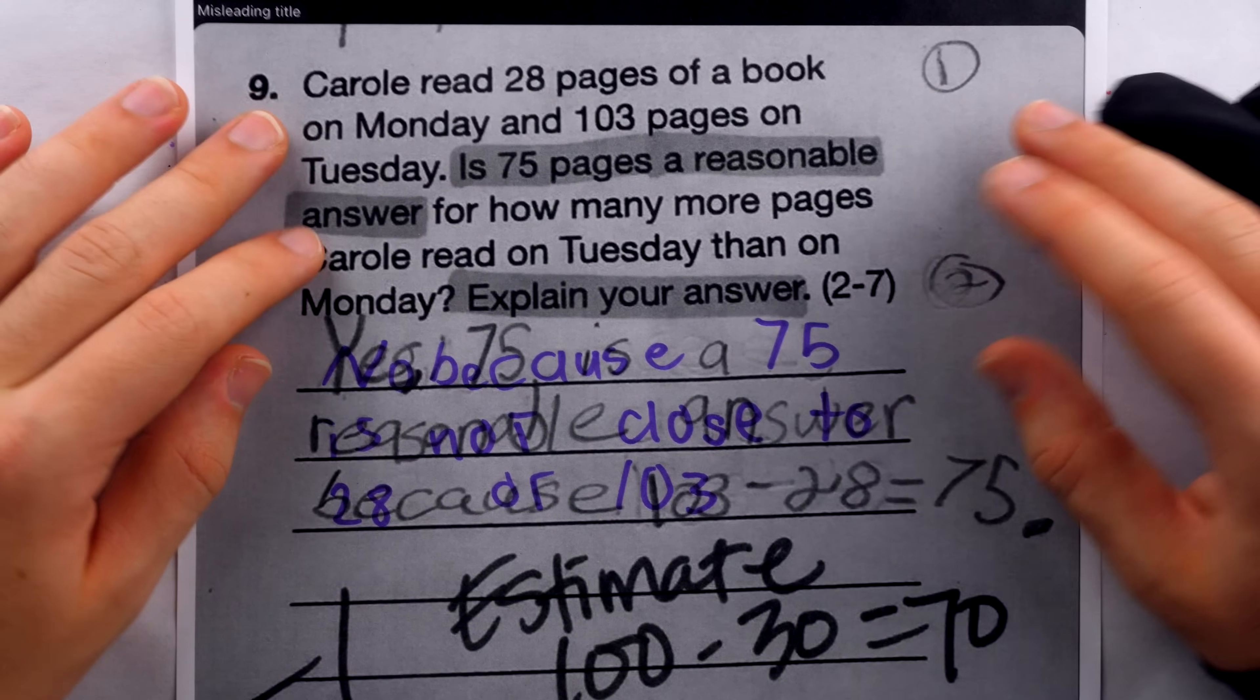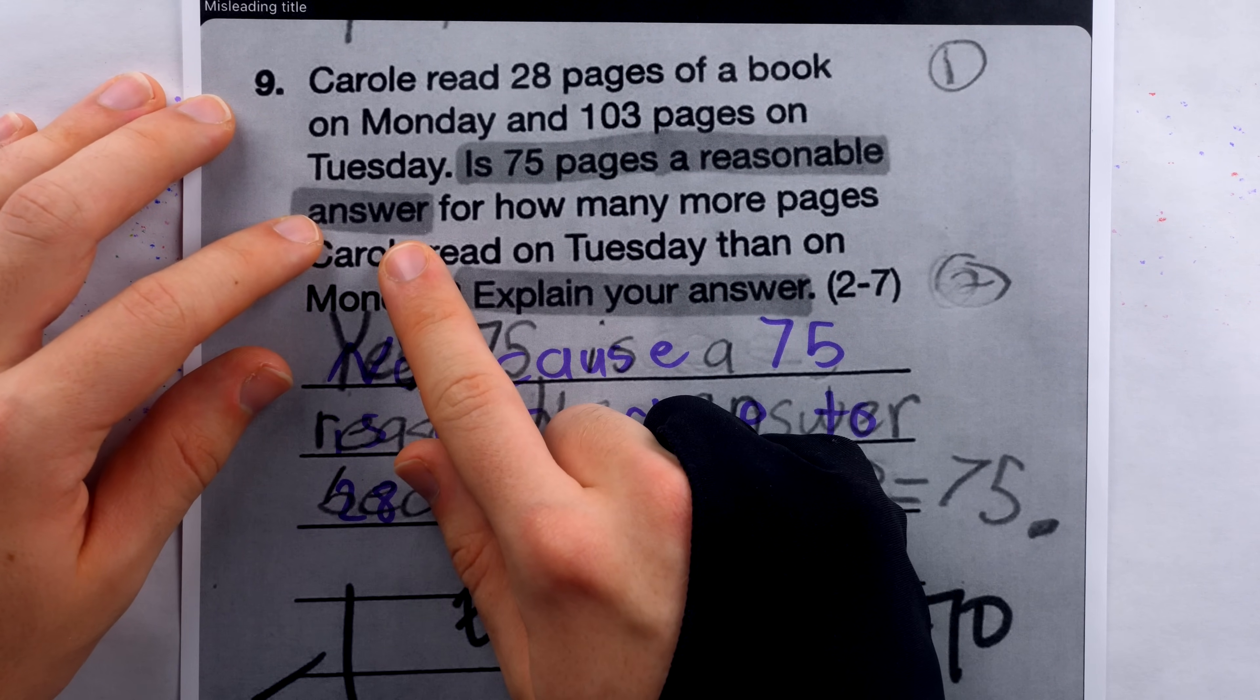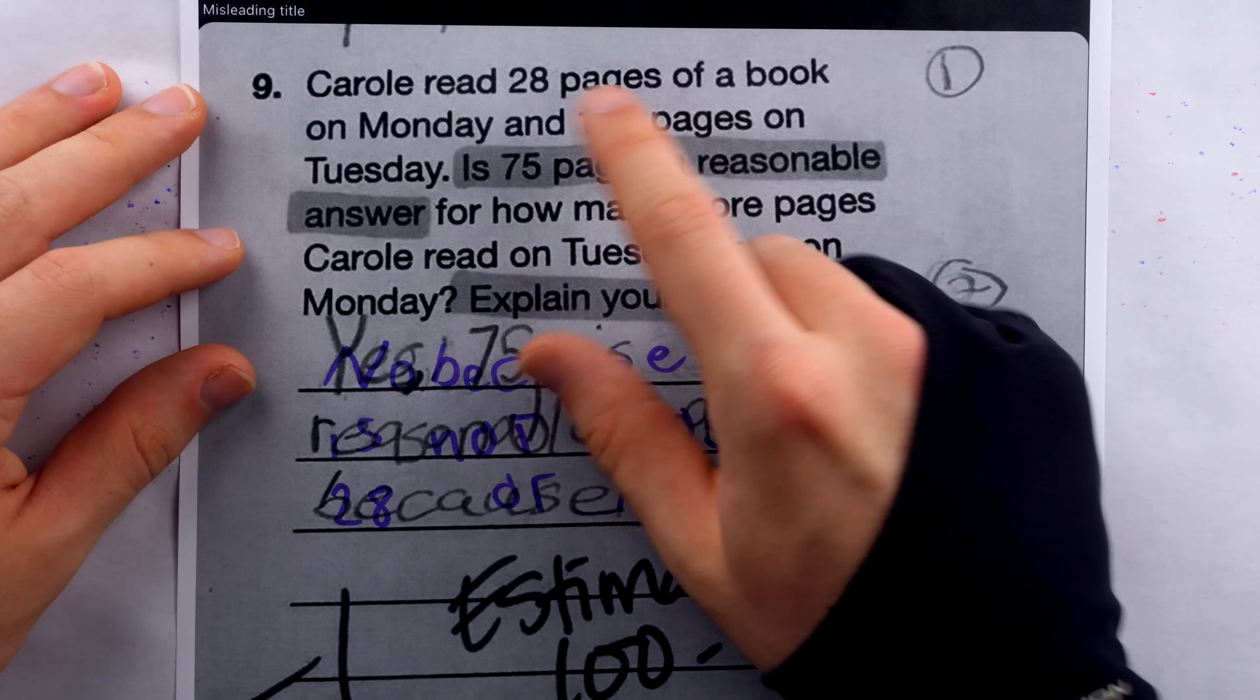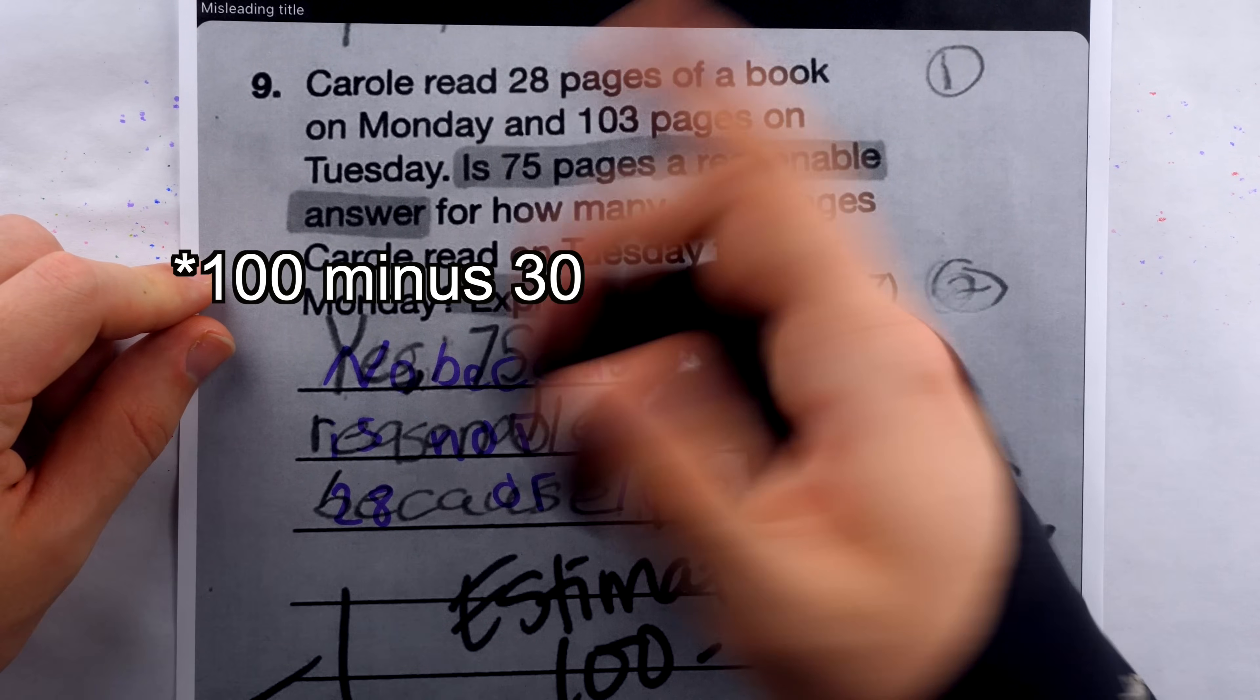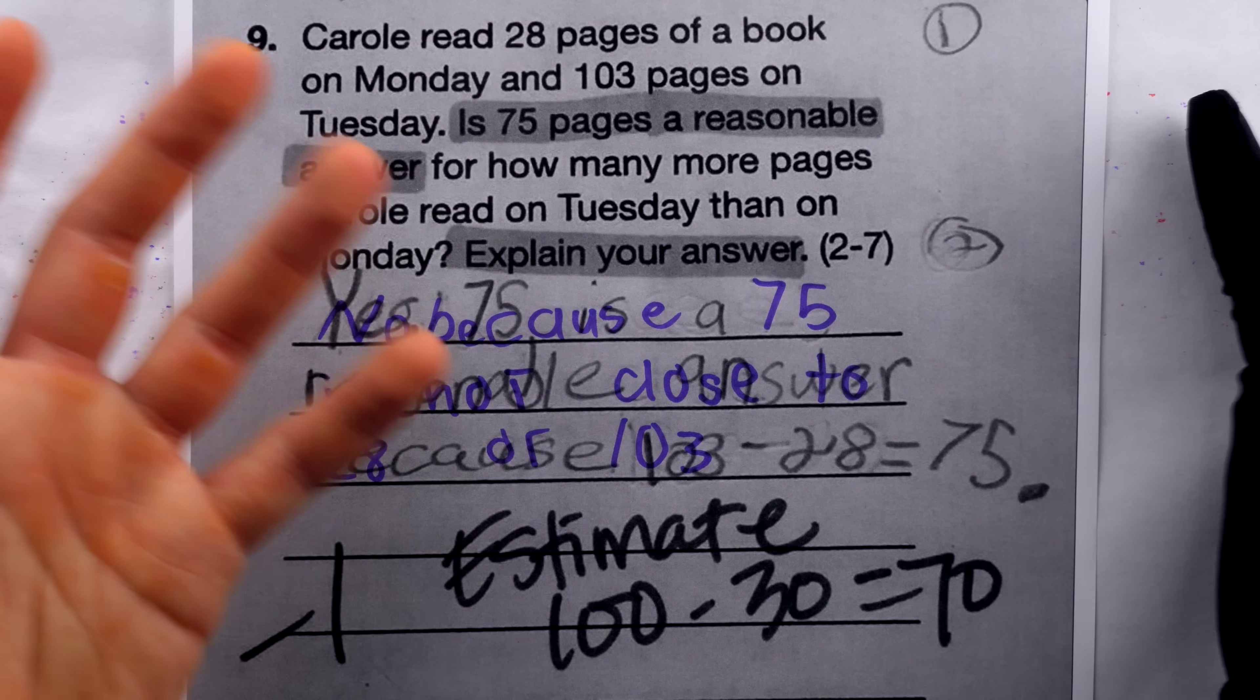So this is an interesting case. The question all by itself is a little strange because you might look at it and say, why would you ask if 75 pages is a reasonable answer when all you have to do is basic subtraction to find the exactly correct answer? But obviously, depending on the grade, this subtraction is not trivial and it might make sense to just do a quick estimation. 100 minus 20 is 70, so 75 appears to be reasonable. But regardless, it's pretty clear the original answer was nonsensical.